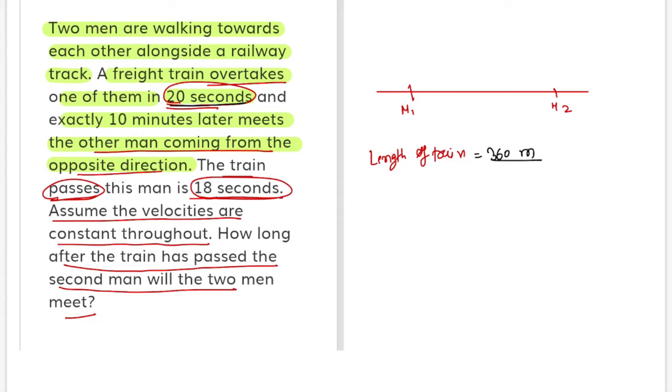This is the direction, this is the direction. First, time is 20 seconds. It means train minus M1 is 18. This is the first equation.